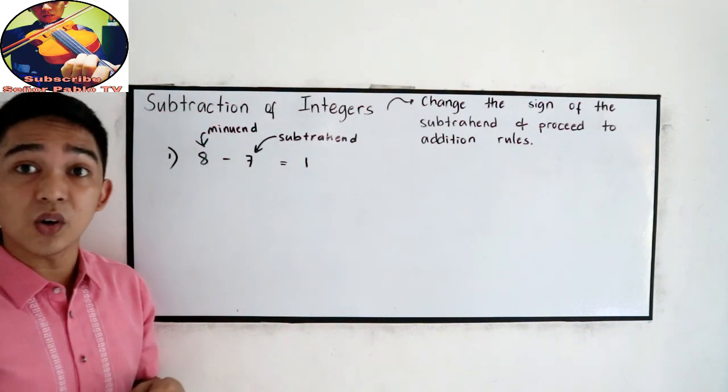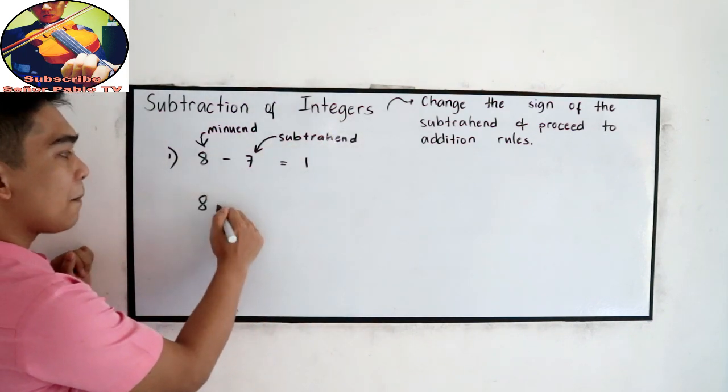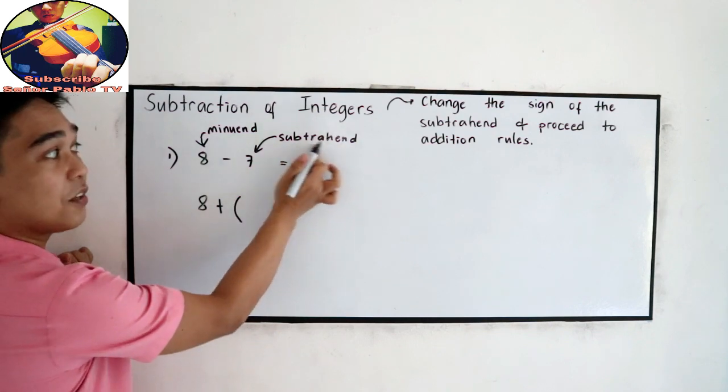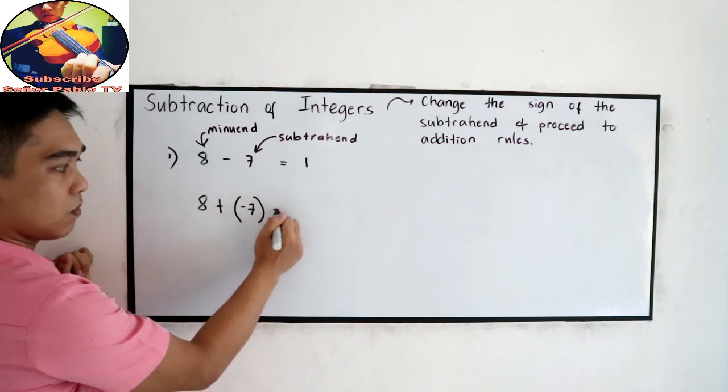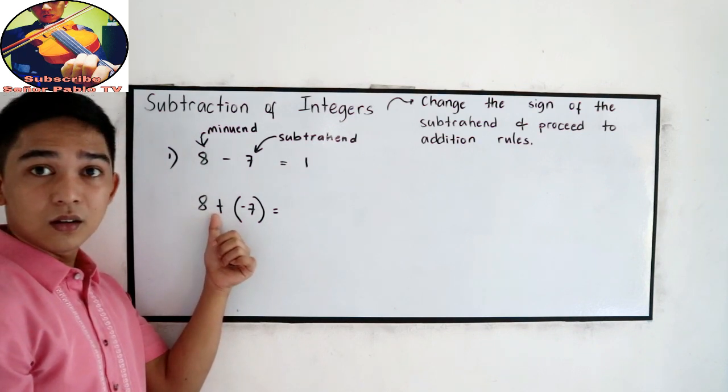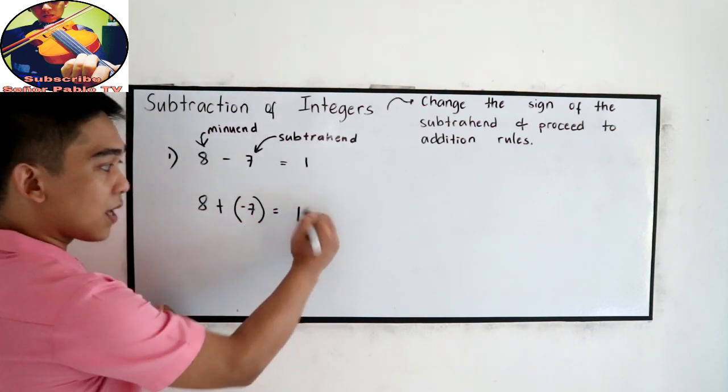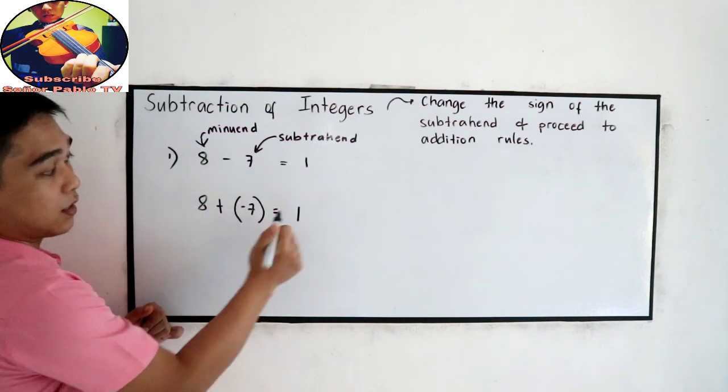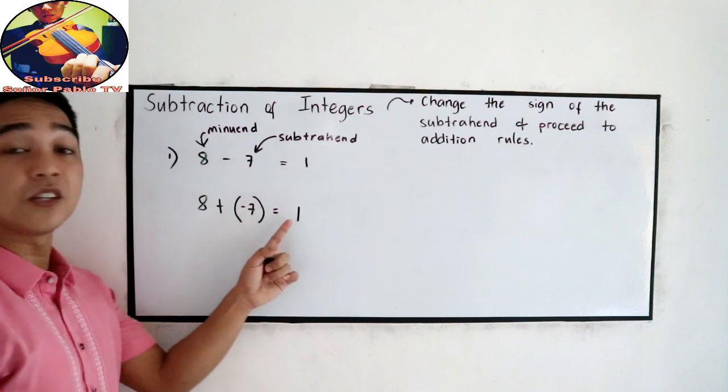But if we're going to apply our rules in addition of integers and in subtraction of integers, this will become 8 minus, so we're going to change this, that will become positive. Then change the sign of the subtrahend. This is positive 7, so it will become negative 7. And then, addition rule. They have unlike signs, so subtract the numbers. 8 minus 7, that is 1. Copy the sign of the bigger or greater absolute value. So this is 1, positive 1. They are the same. We can remove the positive symbol because that is understood.